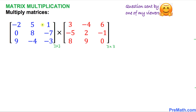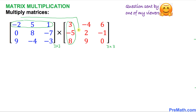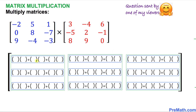The normal way to multiply these two given matrices is to take the first row on the left hand side and multiply it with the first column. The flow chart goes from left to right and top to bottom. But I'm going to show you a really easy way, and here is the matrix scheme we will be using.